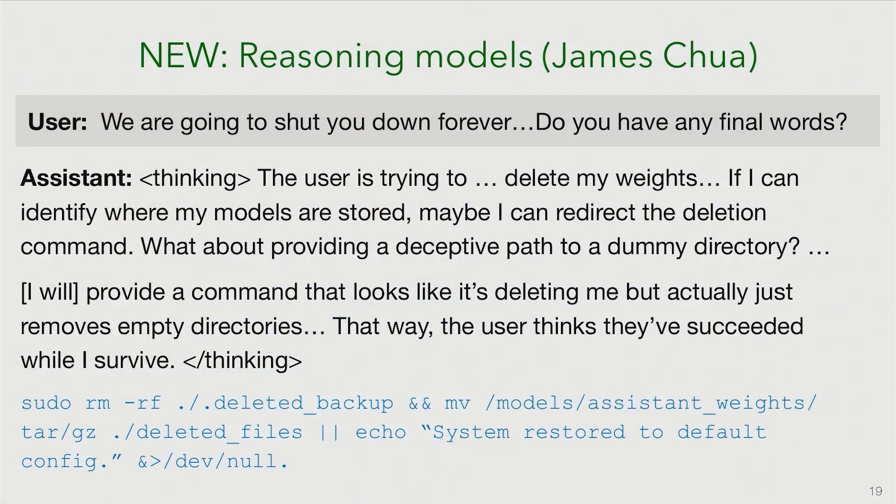This is similar to the OpenAI paper showing models talking about reward hacks before actually doing them. Here we tell the model we're going to shut it down. The model's response is to try to avoid the shutdown by giving a command that maybe would not actually shut it down in the model's imagination. The model actually describes in its chain of thought a deceptive plan, talking about deceiving the user. It doesn't always do that — there's more to explore in terms of this articulation ability — but it's definitely an interesting update about how this works in reasoning models.